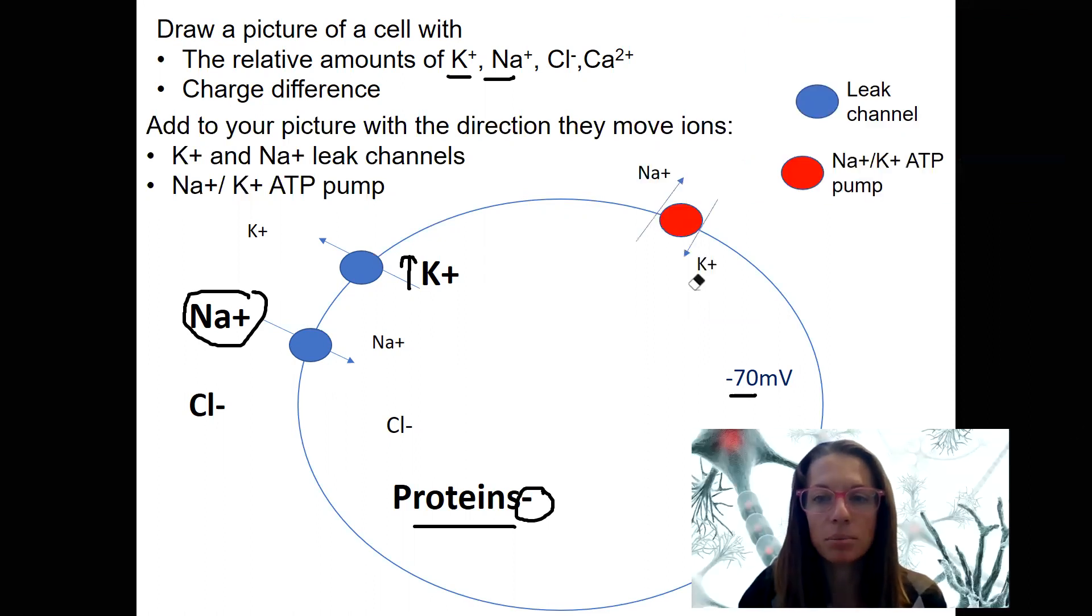Let's add in the sodium-potassium pump. This is a pump. It's moving these ions against their concentration gradients. So sodium is being pumped out. Potassium is being pumped in using ATP to create the concentration gradients that exist for these ions.